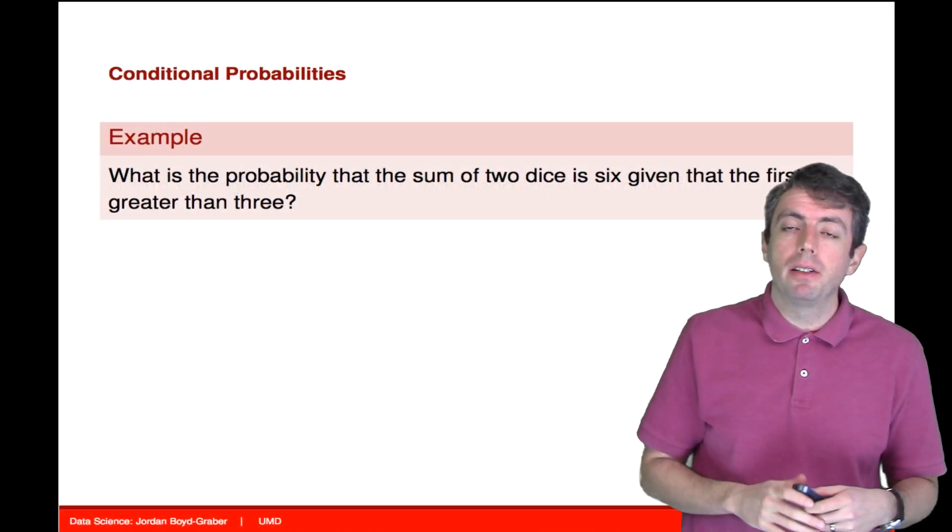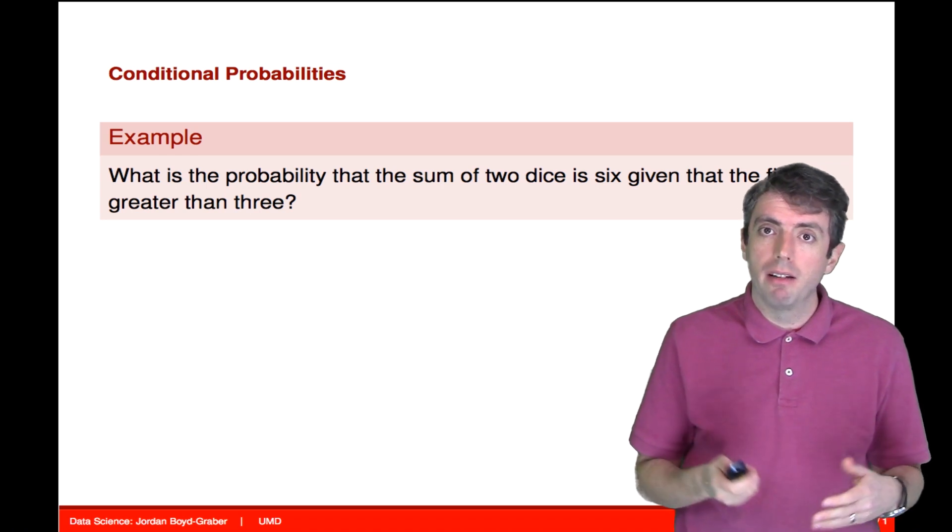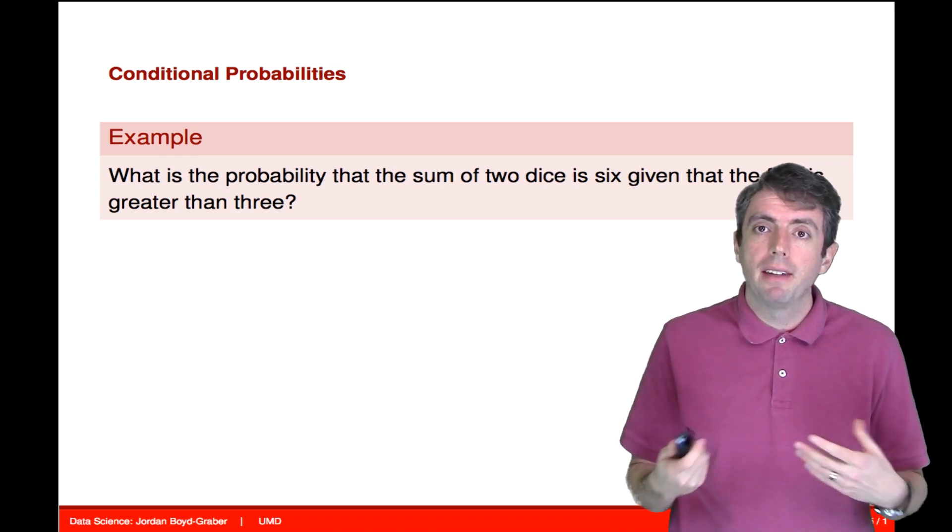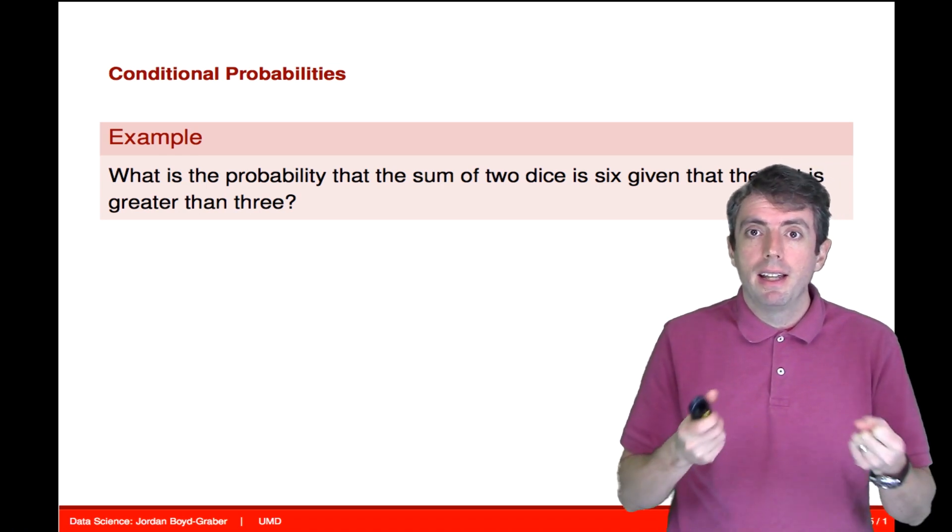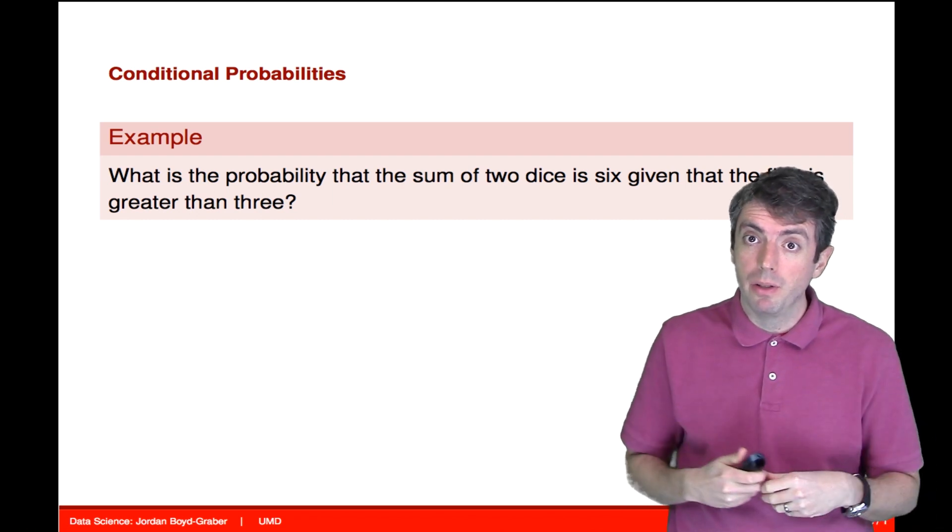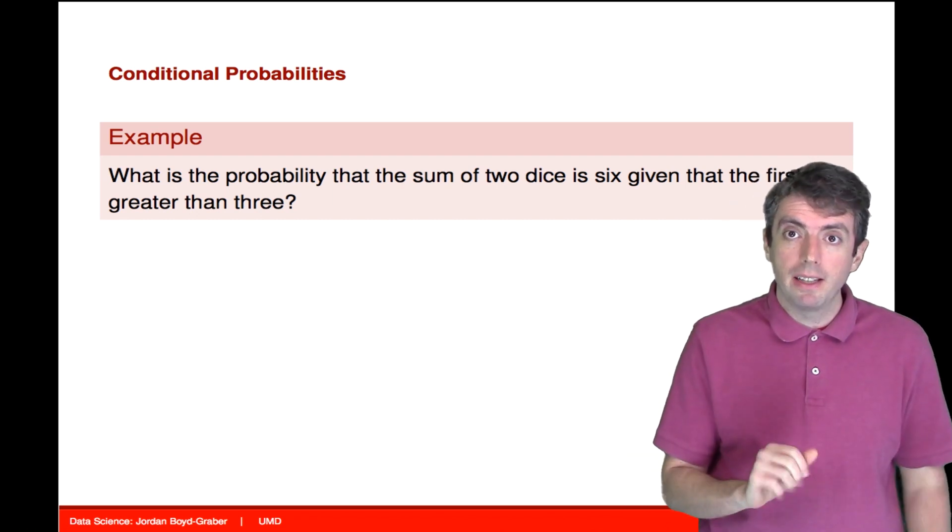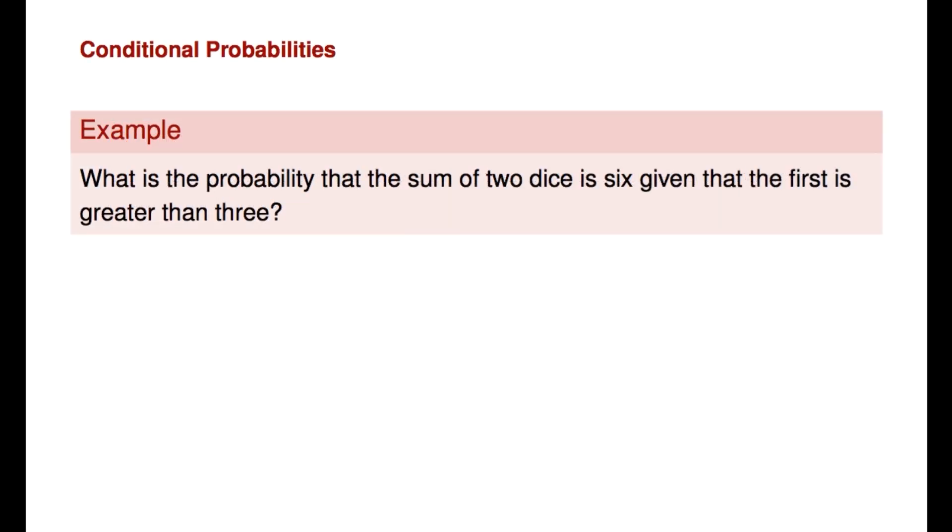Okay, now let's take a look at a concrete example of conditional probabilities, and let's return to the example of rolling two dice. Specifically, what we'll ask is, what is the probability that the sum of two dice will be six, given that the first die was greater than three?